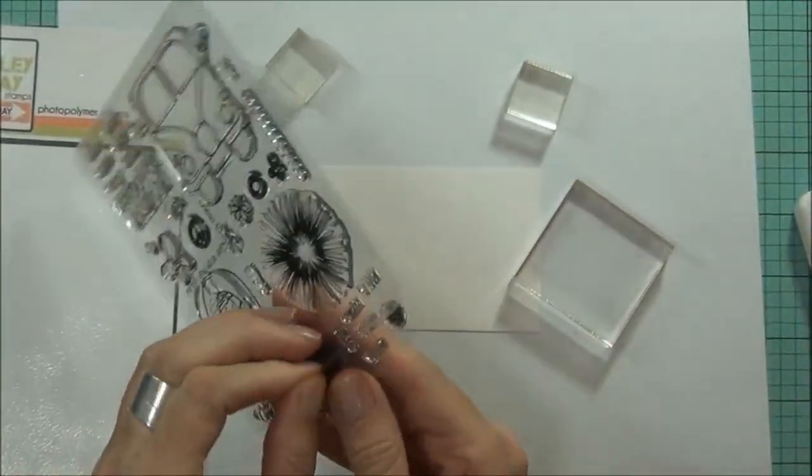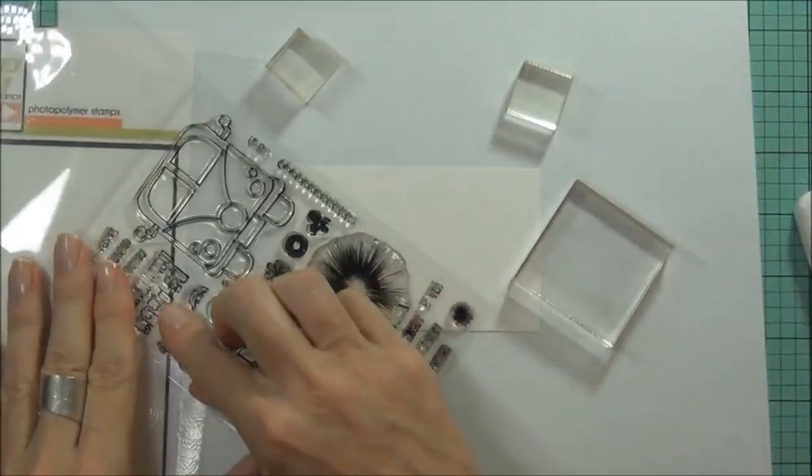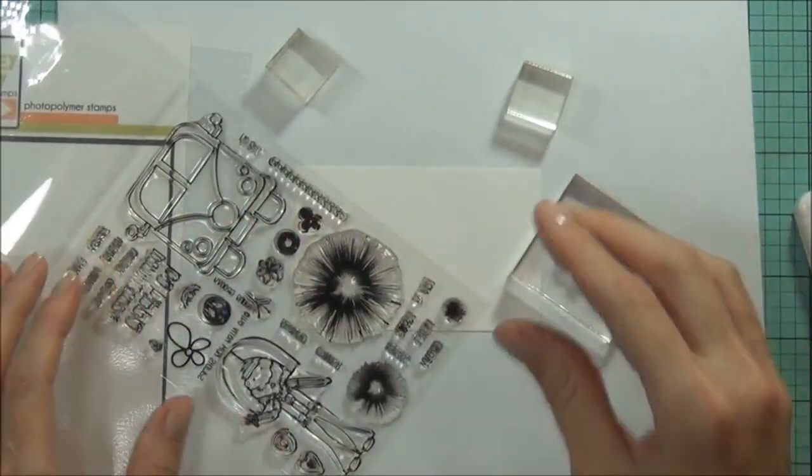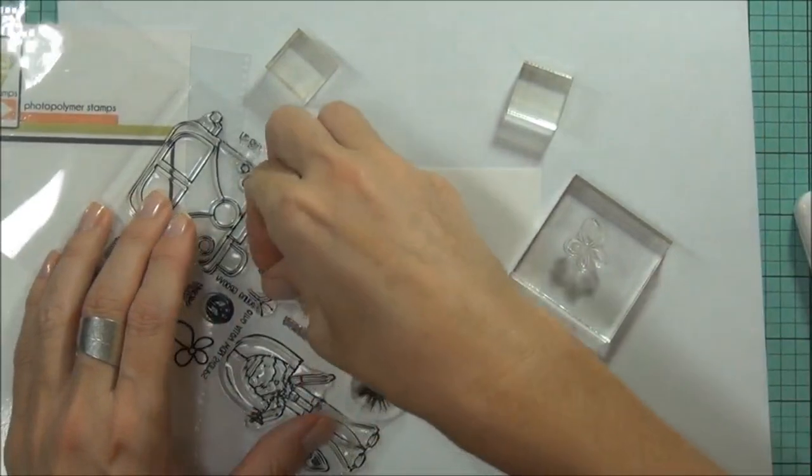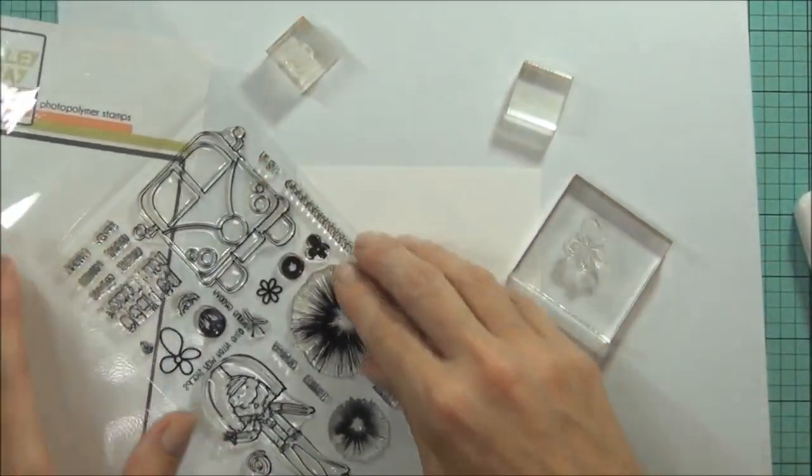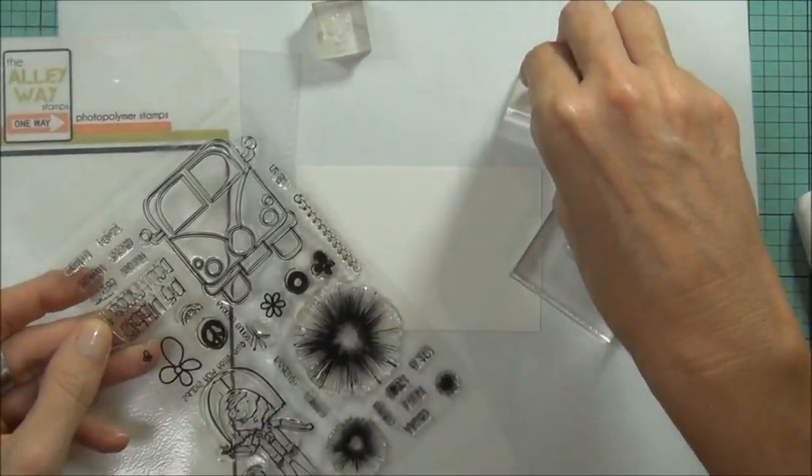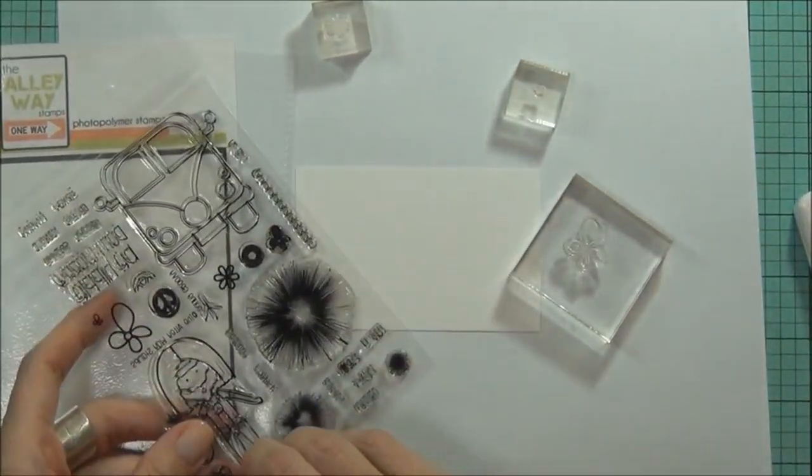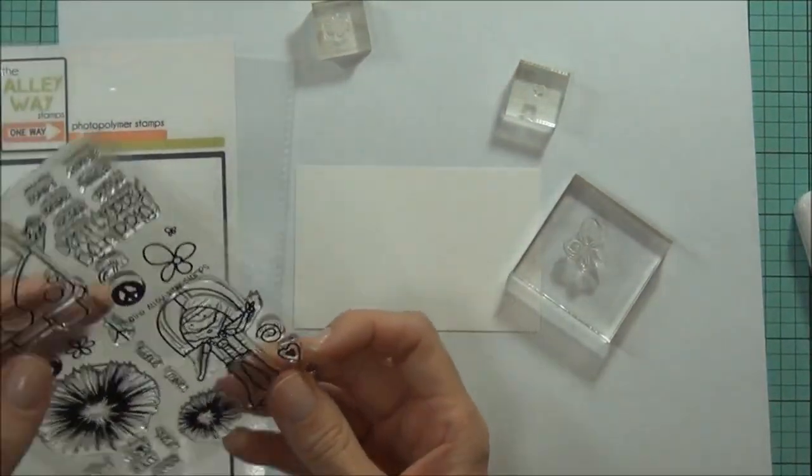So this set has some really funky flowers and I thought it would be nice to make a floral panel. I'm going to put quite a few of these little flowers onto some stamps and then just stamp them out with some Ranger archival ink.